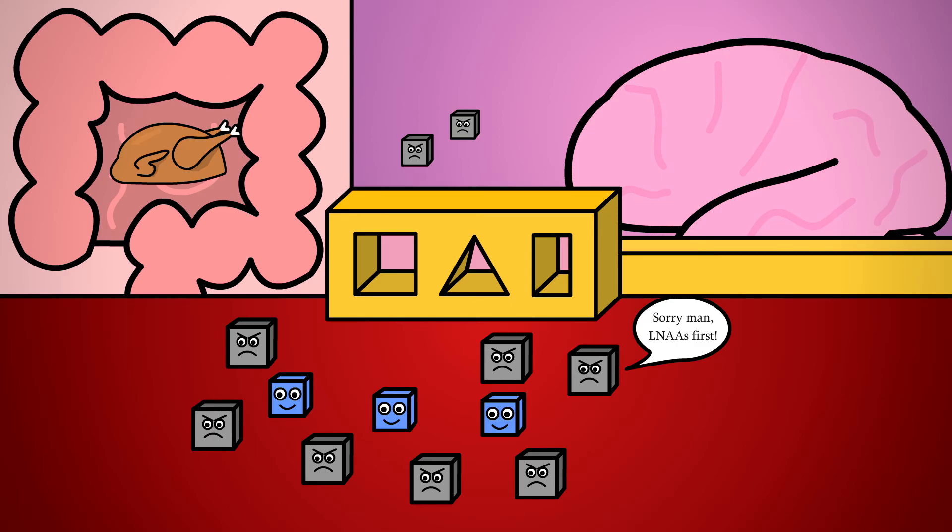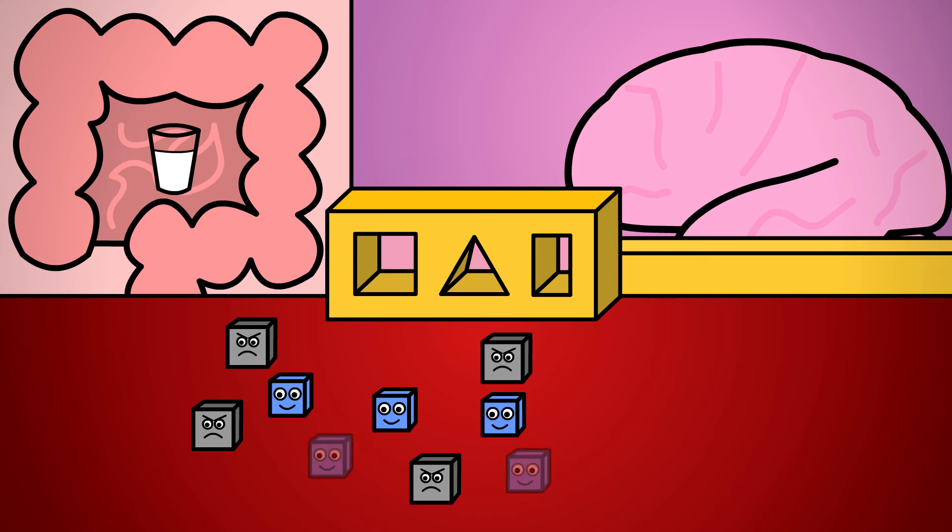Turns out a compound found in milk, alpha-lactalbumin, has the highest tryptophan to large neutral amino acid ratio of all food proteins and can increase that ratio in the blood by 130 percent. Interestingly, eating carbohydrates, which by definition don't have tryptophan, also increases tryptophan concentration in the brain.